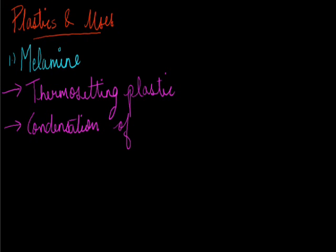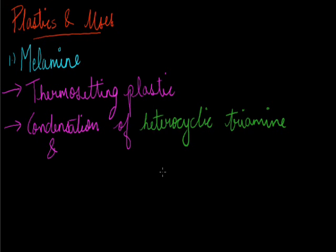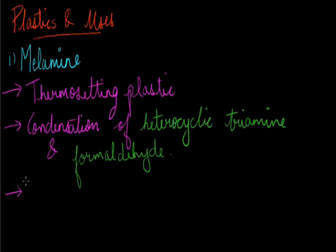Condensation means the addition of two monomers with the formation of a polymer and a small byproduct like water or alcohol. So melamine is formed by the condensation reaction of two monomers: heterocyclic triamine and formaldehyde. Up to class 8 we only need to know what the monomer units are.